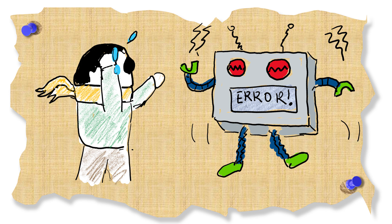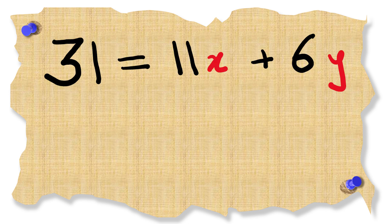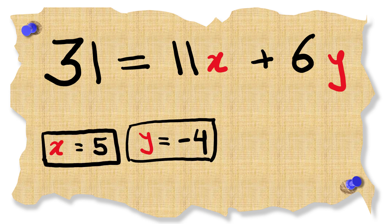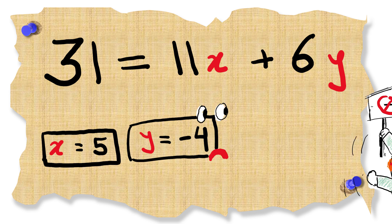This algorithm can also tell you when a number cannot be expressed as such a sum. For example if we run our algorithm on 31 for 11 and 6 we get x equals 5 which gives y equals negative 4. A negative number!